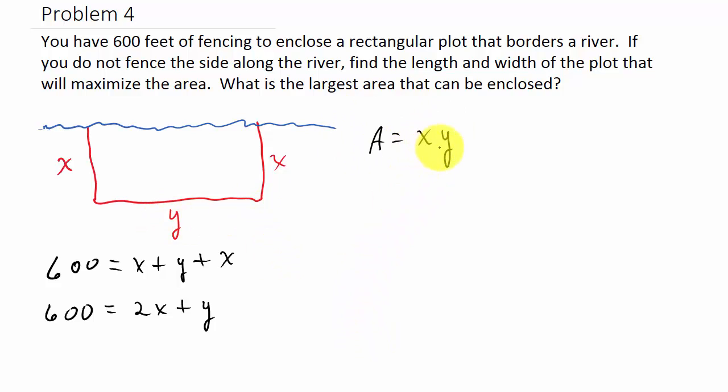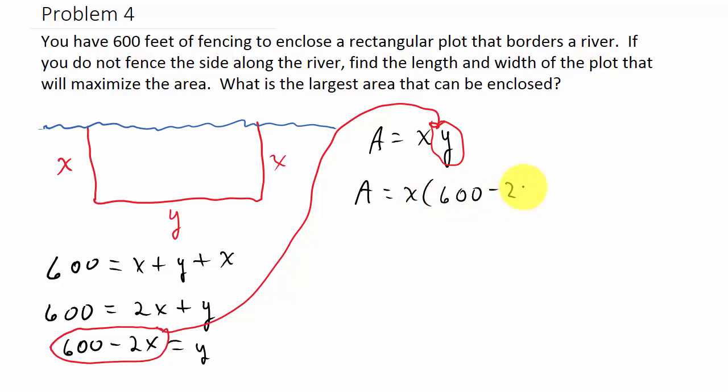Alright, so to maximize this, what we need to do is get it all in terms of one variable. So we'll get it all in terms of X. So I'm going to take this equation here and solve it for Y. So if I subtract 2X from both sides, I get Y equals 600 minus 2X. And what I'm going to do now is I'm going to take this and plug it in for Y. And so I get A is equal to X times 600 minus 2X. So A is 600X minus 2X squared. So A is negative 2X squared plus 600X.